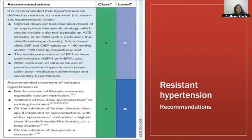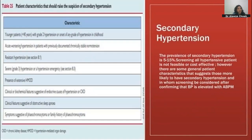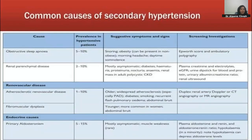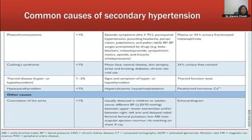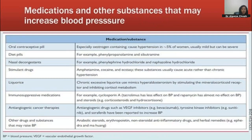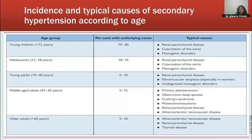Suspect secondary hypertension in younger patients with Grade 2 or 3 hypertension, sudden worsening, severe Grade 3 hypertension, extensive HMOD, or obstructive sleep apnea. Common causes include: obstructive sleep apnea, primary renal parenchymal disease, renovascular disease, endocrine causes (pheochromocytoma, Cushing's syndrome, hyperaldosteronism, thyroid disease, hyperparathyroidism), aortic coarctation, and drug-induced causes. By age group: in middle age — primary hyperaldosteronism is most common; in young females — fibromuscular dysplasia is the most common cause; in elderly — atherosclerotic renal vascular disease is most common.